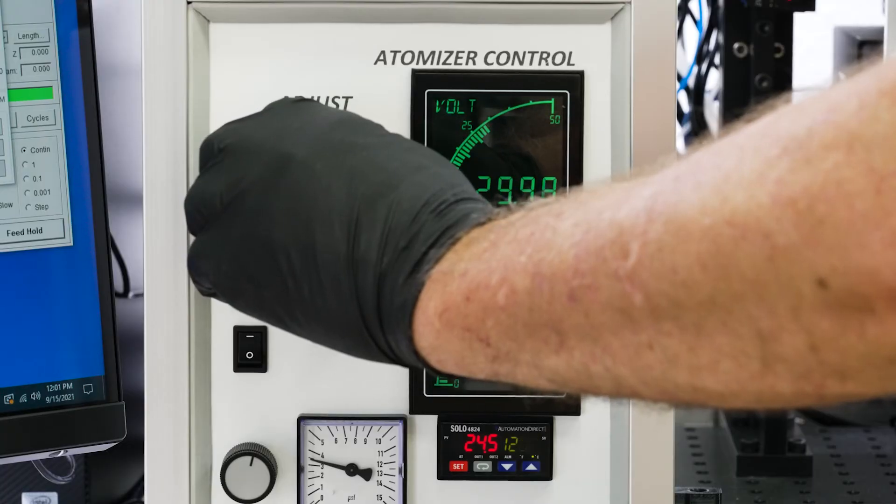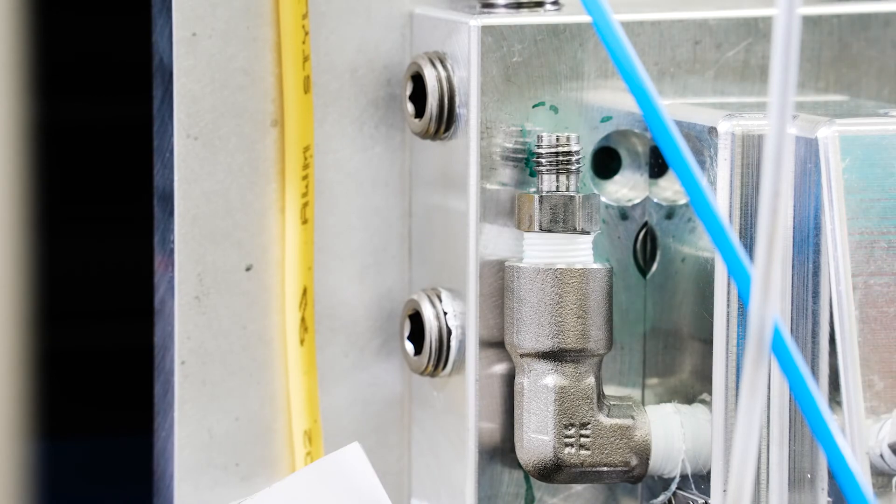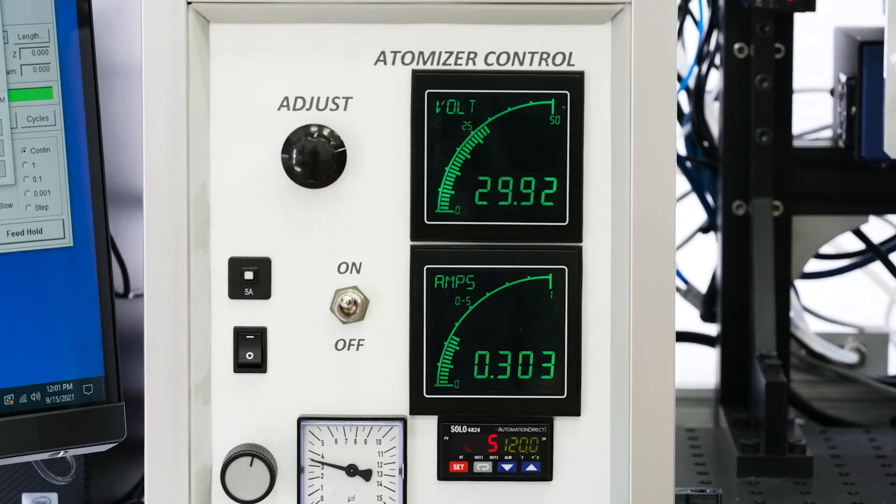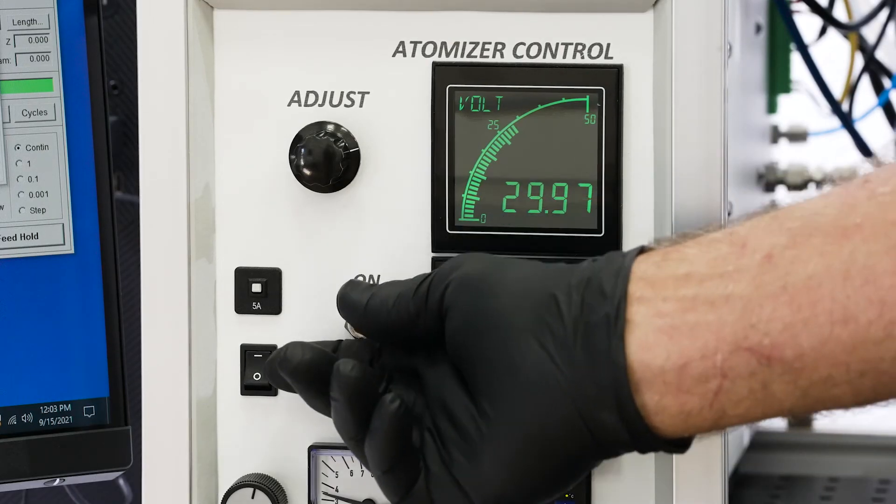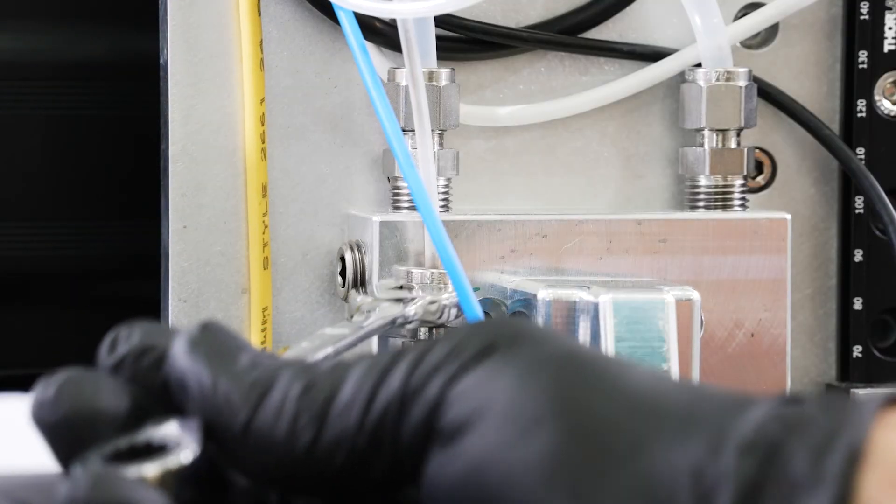If not, repeat the previous step until a dense aerosol flows from the ink cartridge. Once the aerosol is observed, stop adjusting the atomizer voltage upward and note this voltage. This is the best operating voltage for atomizer using the ink loaded into the ink cartridge. Turn off the atomizer voltage and reattach the aerosol supply line to the ink cartridge.